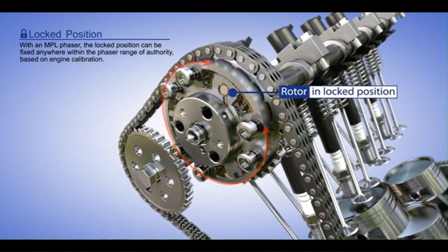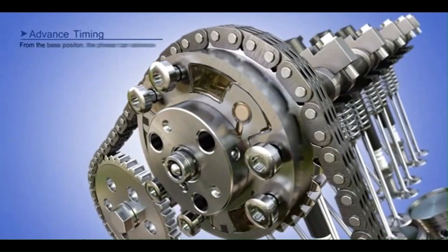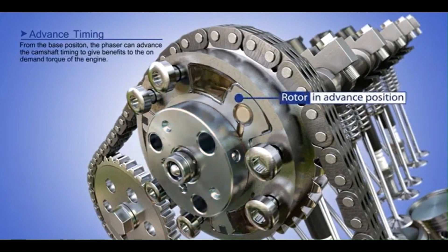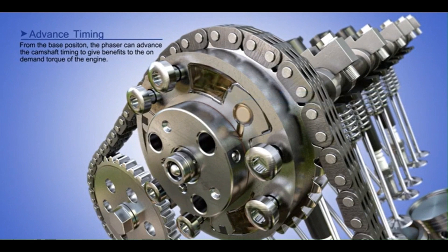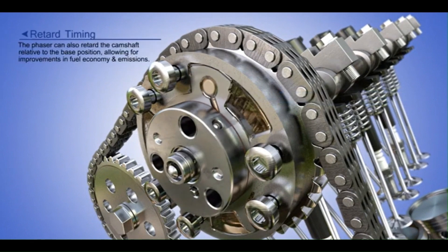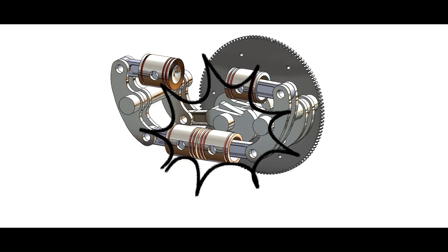Addressing These Losses: Engine designers often try to minimize these losses using advanced technologies like variable valve timing (VVT), camless engines, turbocharging, and friction-reducing coatings. In newer engines, direct injection and improved combustion chamber designs can also help reduce energy waste by ensuring more efficient combustion and better airflow. All this has been removed in the Asana engine.